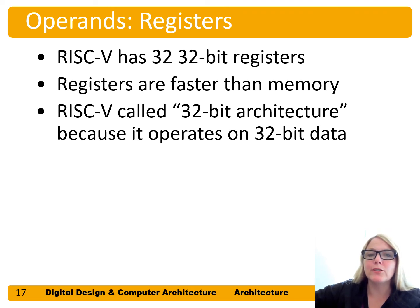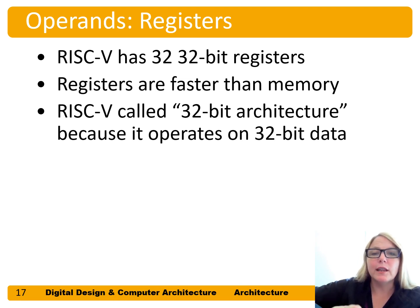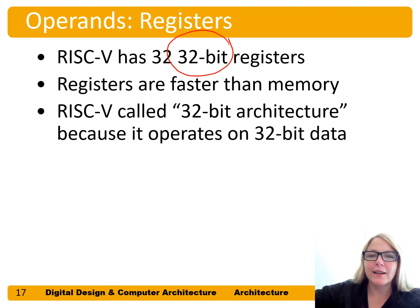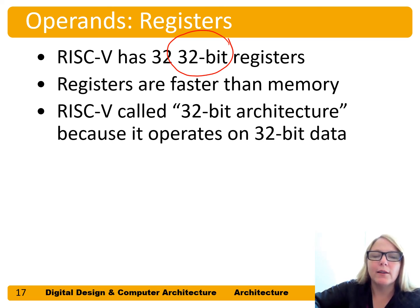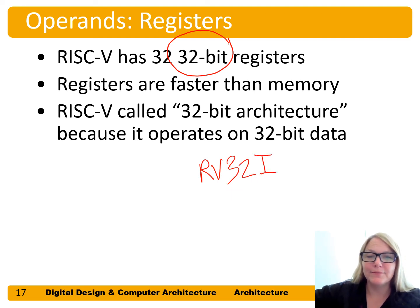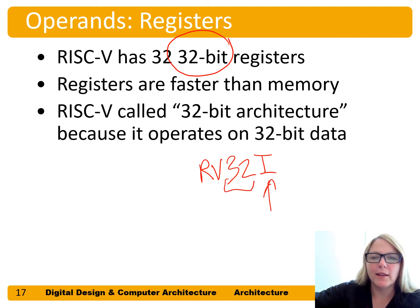RISC-V has 32 32-bit registers. These registers are faster than memory but we only have 32 of them. RISC-V is called a 32-bit architecture because we're operating on a data size of 32 bits. This specific version is the RV32I version of RISC-V — 32 being the number of bits we're operating on, and I being integer.